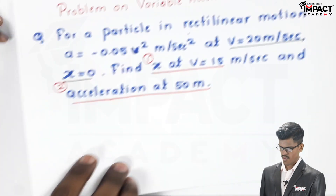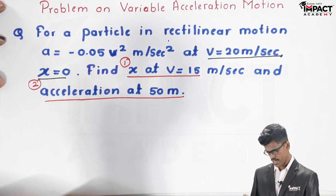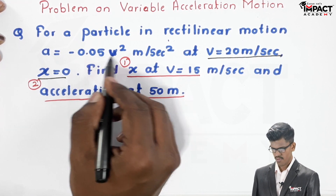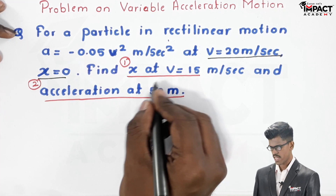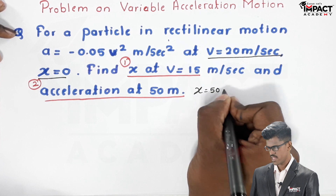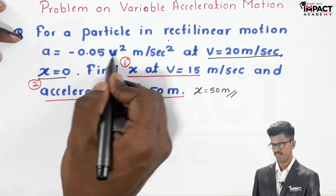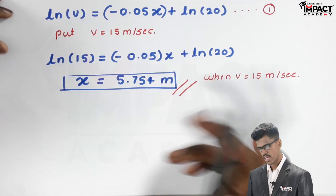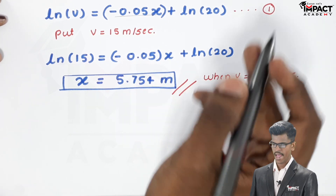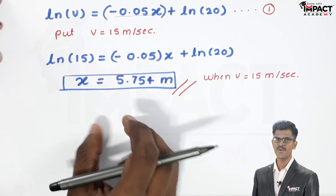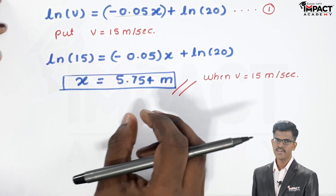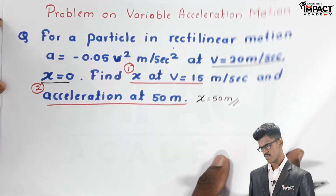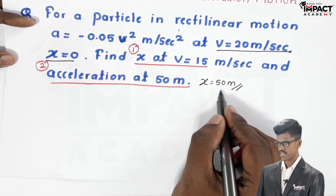Now we have to calculate the acceleration at x equal to 50 meters. The acceleration equation a equals minus 0.05 v squared has velocity as the variable — it is not a function of x. So to find acceleration at x equals 50 meters, we first find the velocity at that position using our velocity equation, then substitute that velocity into the acceleration equation.